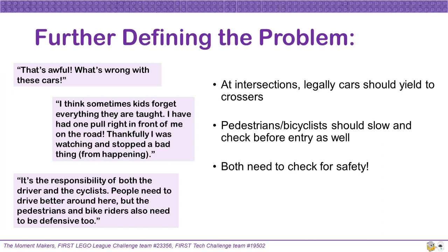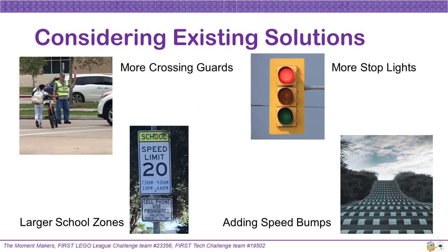Legally, cars should yield to crossers at intersections, but pedestrians and bicyclists should check before entry as well. They can't just dart out in front of cars. Both need to check for safety. Our solution involves trying to change the behavior of both groups. As a part of our solution development, we needed to consider existing solutions to make sure that our solution would be innovative and solve the problem better than the existing solutions.